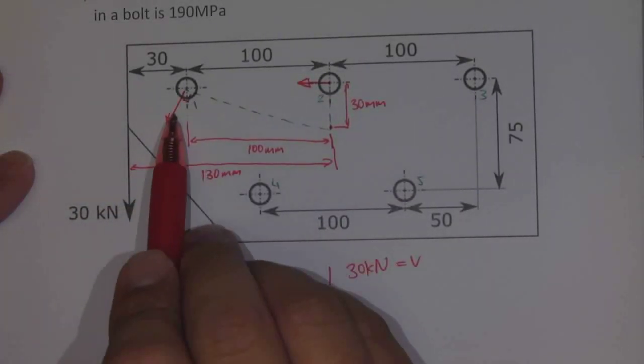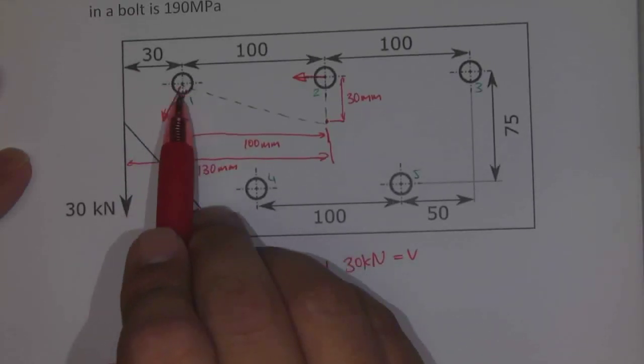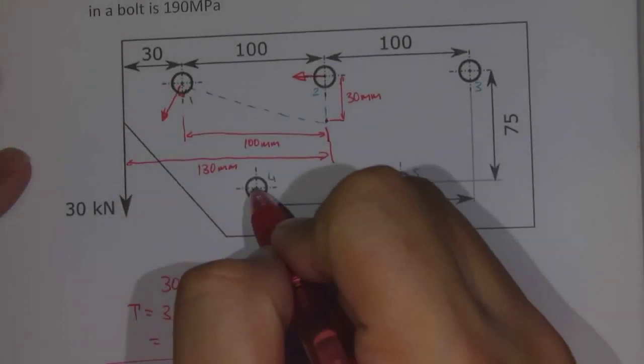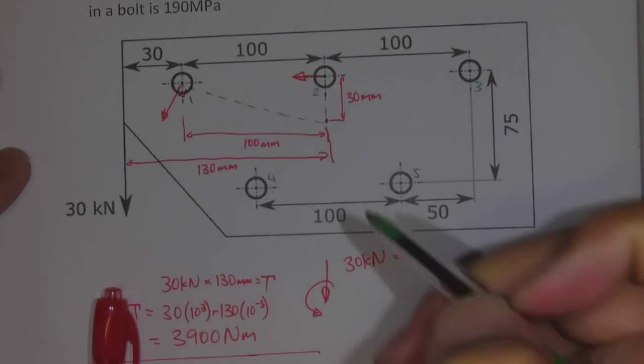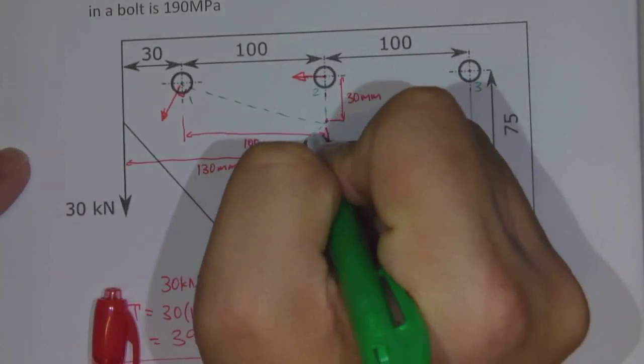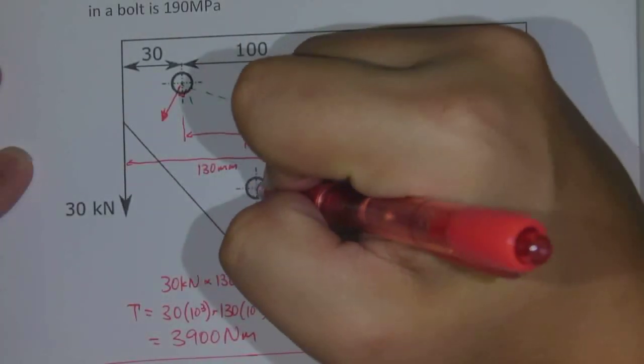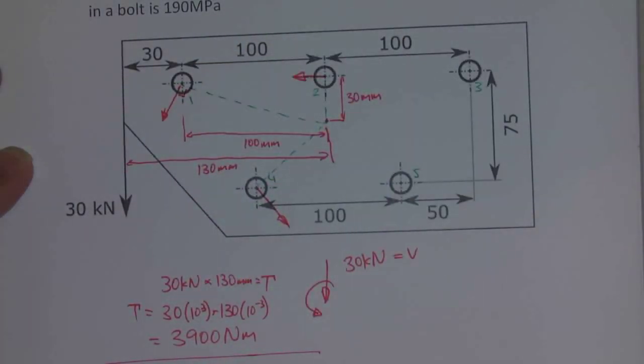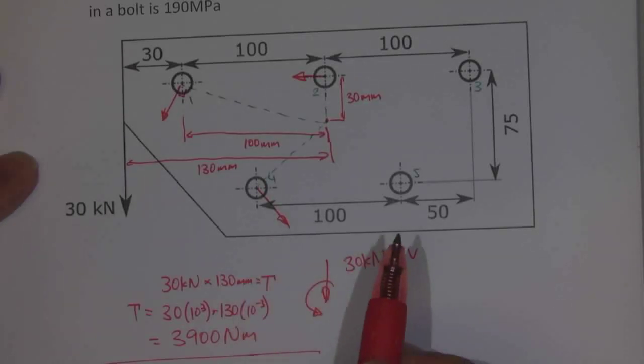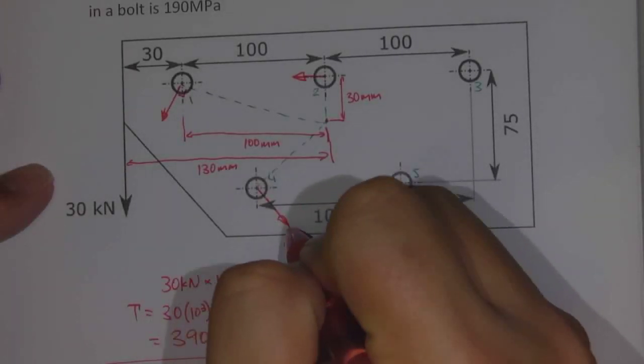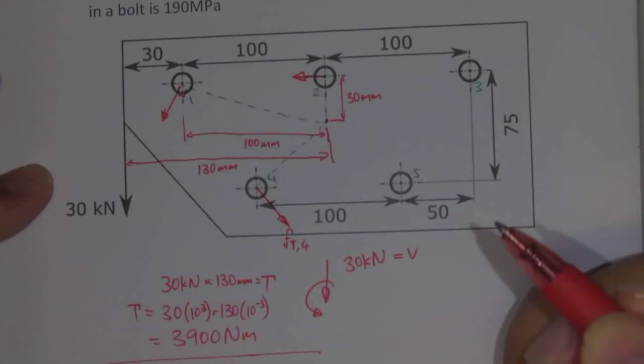Because this is further away we expect that this bolt will support a larger force for number 4. There will be a force which acts in this direction.